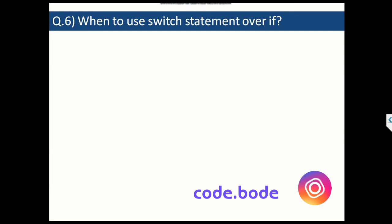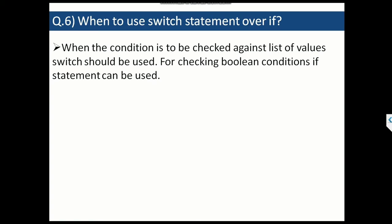When should you use switch over if? Both have their pros and cons. If you are checking against a list of multiple values, switch is always better to use. If you are checking boolean conditions like less-than or greater-than comparisons, you need if, because those cannot be done in switch. But if you're checking whether a number equals 1, 2, or 3, or a string equals 'January', 'February', and so on, switch works in a much better way — for example, displaying a month or day of the week from a number.